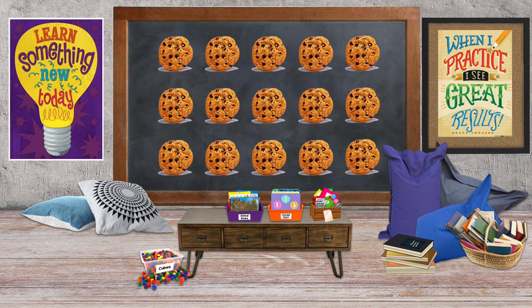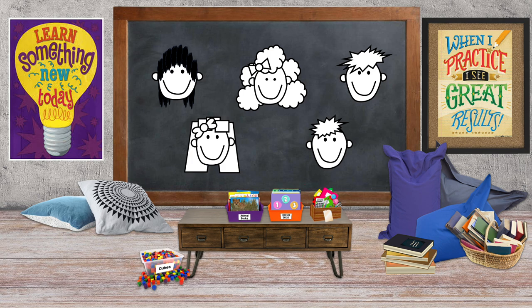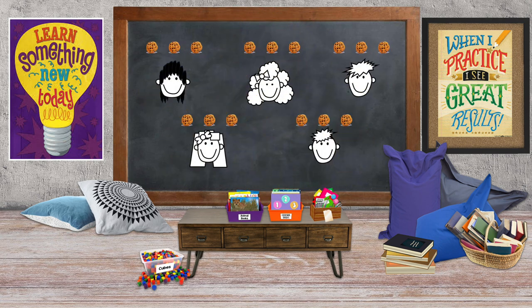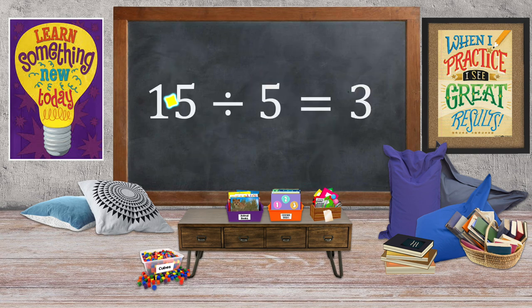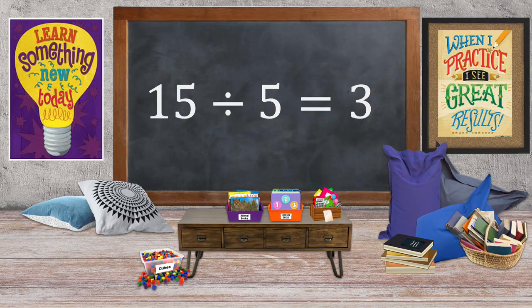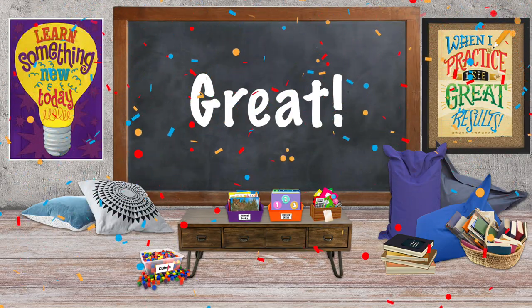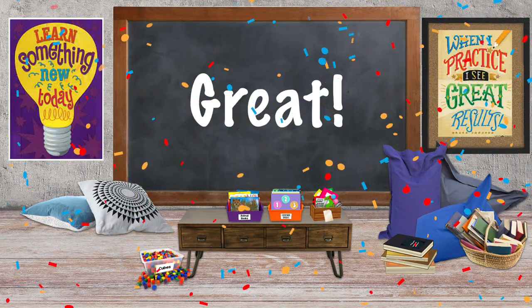Fifteen cookies divided evenly among five people means that each person gets three cookies. Or we could say that fifteen divided by five equals three. That was a great example. Let's try it again.